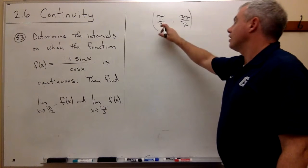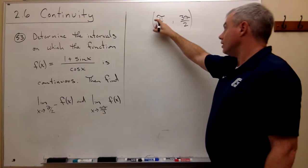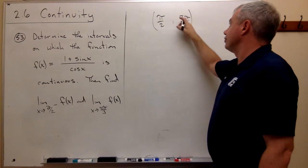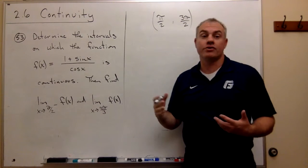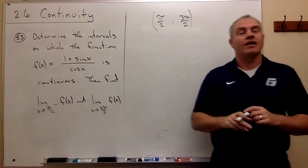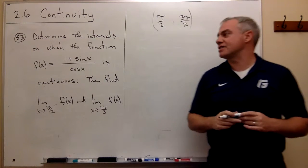So at all of these, like 1 pi over 2, 3 pi over 2, 5 pi over 2, all of those are bad, but everything else is good. So how do we write this in a concise way?